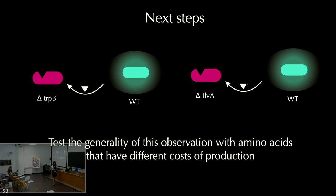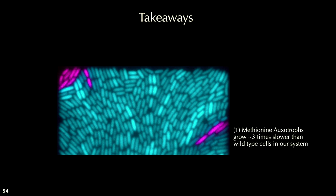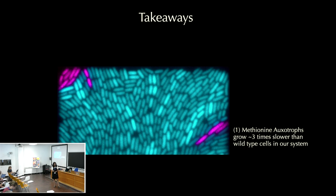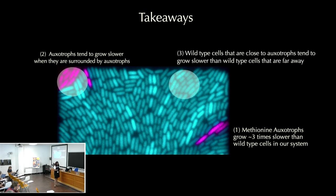Next, I want to test the generality of this observation with amino acids that have different costs of production. Methionine is relatively expensive for the cell to produce, so I'd also like to work with less expensive amino acids like isoleucine or tryptophan and see if I get similar results. To summarize: methionine auxotrophs grow roughly three times slower than wild type; auxotrophs grow slower when surrounded by other auxotrophs; and wild type cells close to auxotrophs grow slower than those far from auxotrophs.